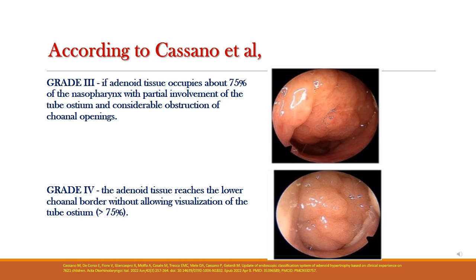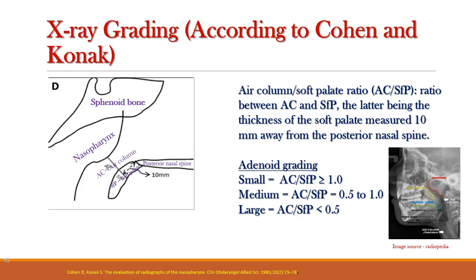In grade three there is considerable obstruction of the choanal opening. In grade four adenoid hypertrophy, the adenoid tissue reaches the lower choanal border without allowing visualization of the tube ostium, as there is more than 75% blockage. In the endoscopic view, hardly any air column is visible, as the adenoid tissue is completely occupying the nasopharyngeal opening.